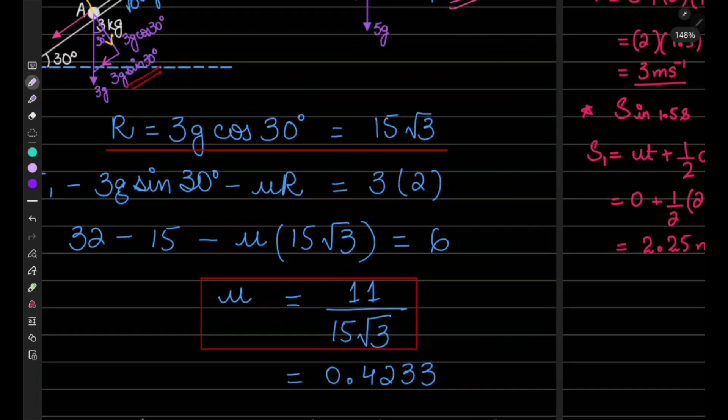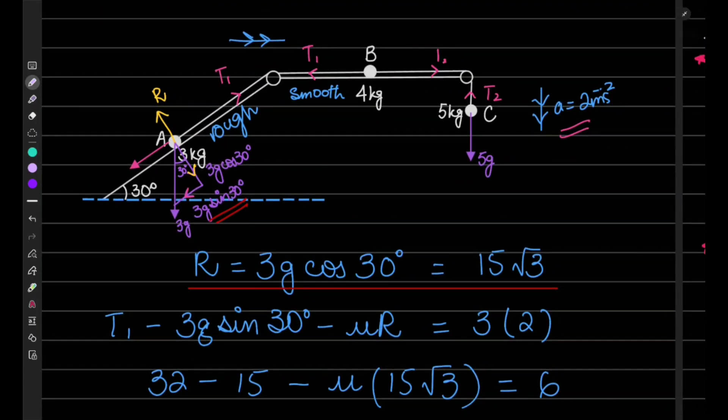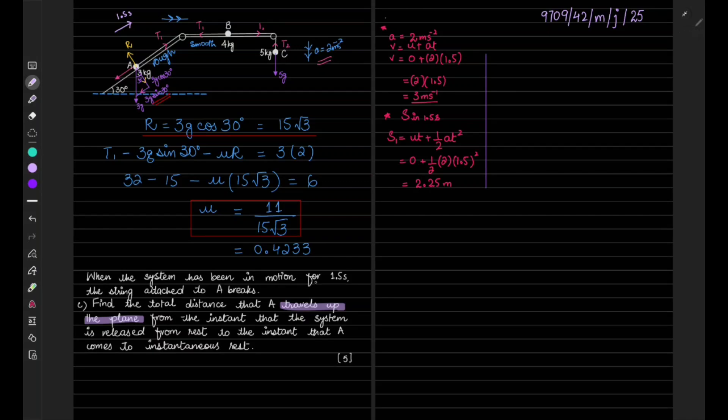So what part of the journey are they talking about? They say your particle A is moving up the plane and it has covered some distance in 1.5 seconds. It has been in motion for 1.5 seconds.